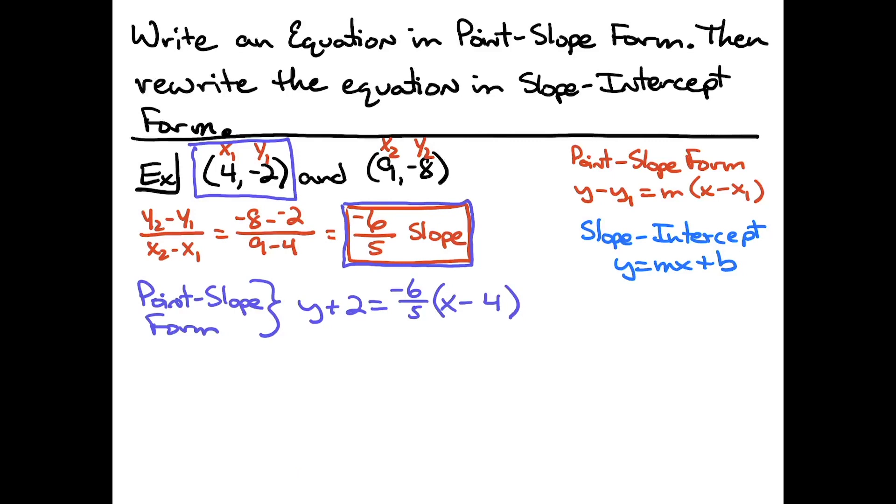The second part of the instructions say to then rewrite that into slope-intercept form. So I'm just going to algebraically manipulate this first answer here. Let's actually box this in though, so that we know that that's our first answer.